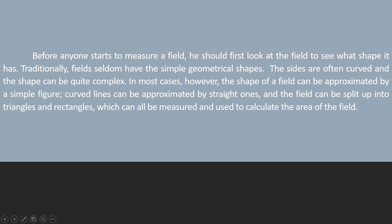Before anyone starts to measure a field, you should take a look at the field to see what shape it has. Traditionally, fields seldom have simple geometrical shapes — the sides are often curved and the shape can be quite complex. In most cases, however, the shape of a field can be approximated by a simple figure: curved lines can be approximated by straight ones, and the field can be split up into triangles and rectangles which can all be measured and used to calculate the area of the field.